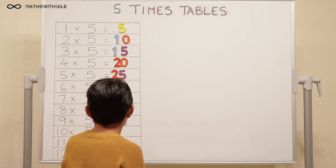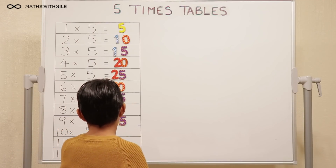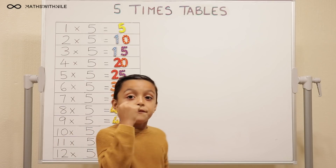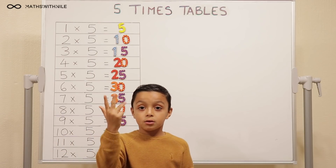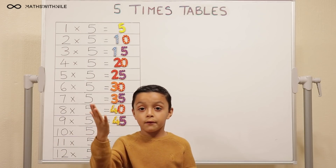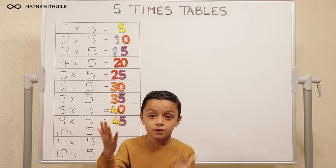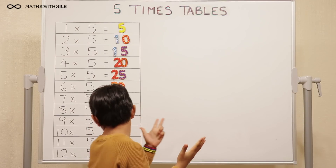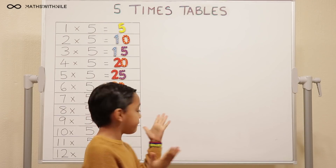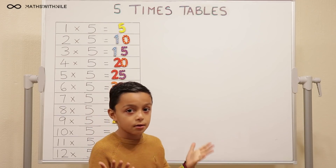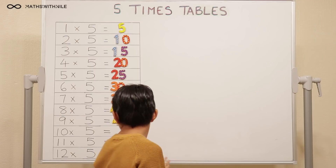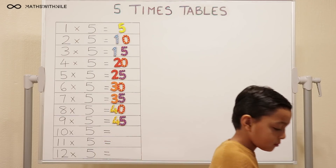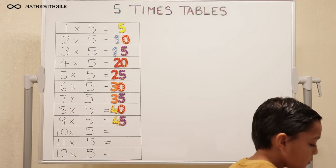Ten times five. Five, ten, fifteen, twenty, twenty-five, thirty, thirty-five, forty, forty-five, fifty. Fifty. So put fifty on the board.